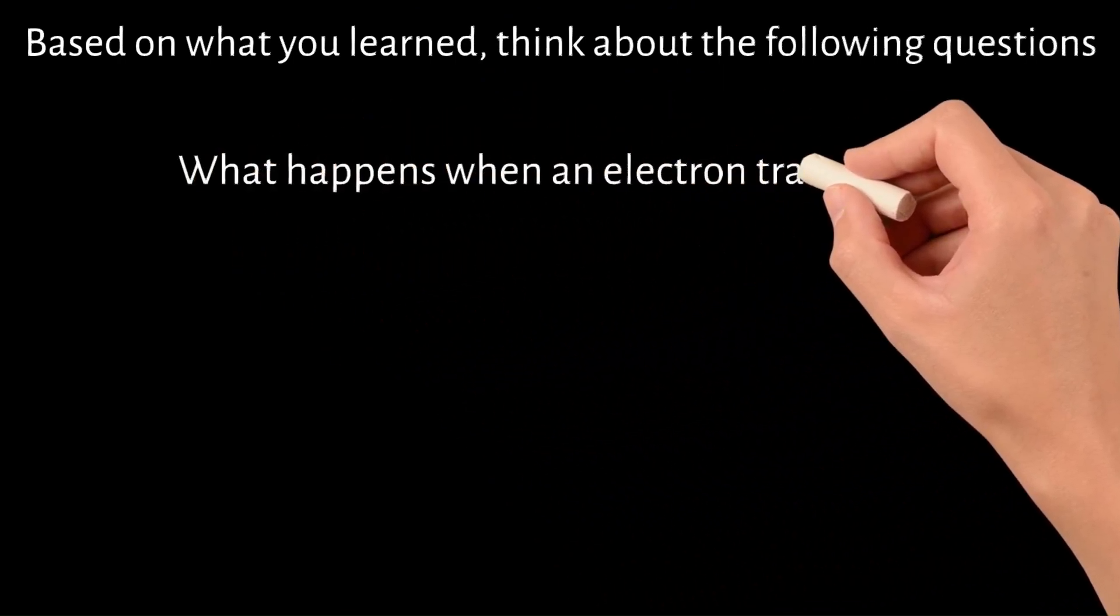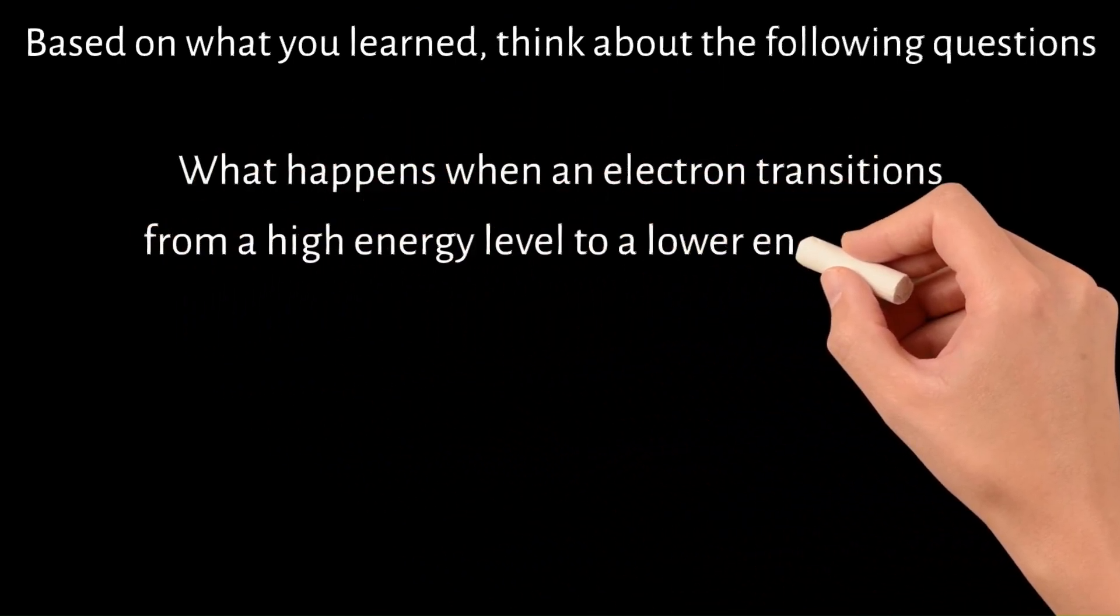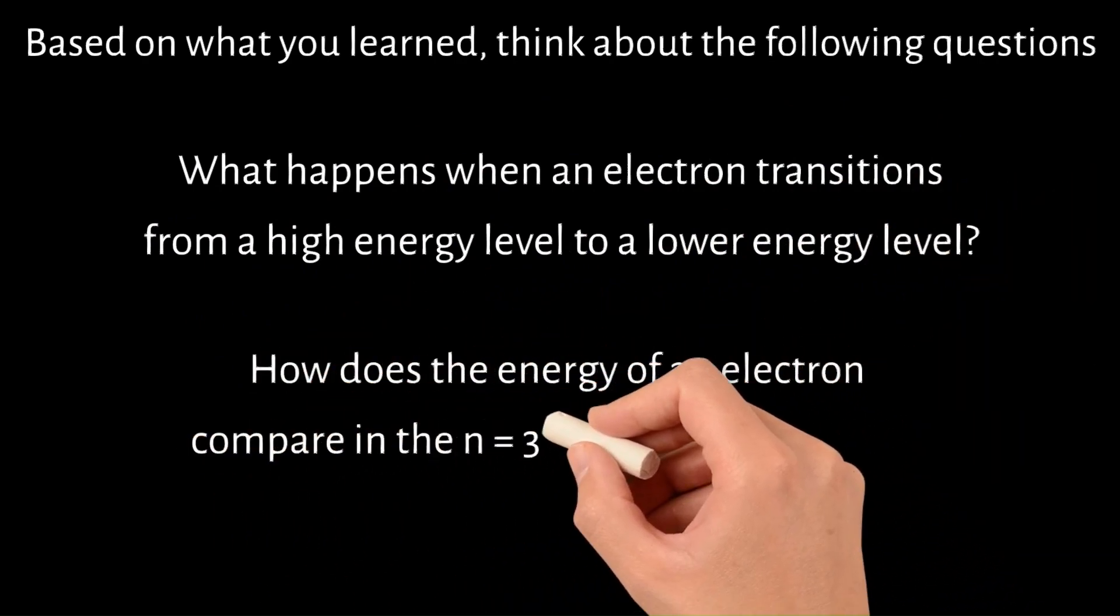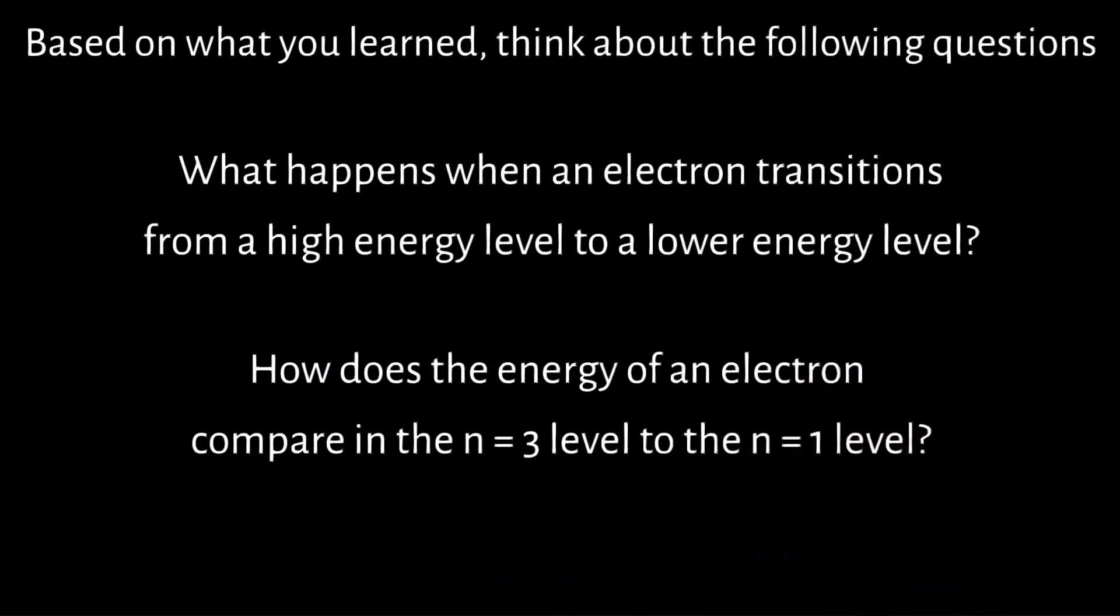What happens when an electron transitions from a high energy level to a lower energy level? How does the energy of an electron compare in the n equals 3 level to the n equals 1 level?